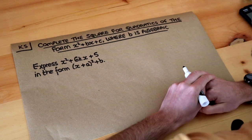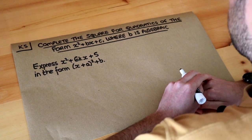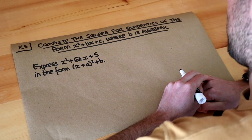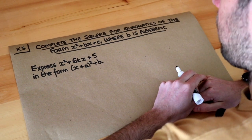Hello and welcome to this Dr. Ross Maths key skill video on completing the square for quadratics of the form x² + bx + c, where b is algebraic.